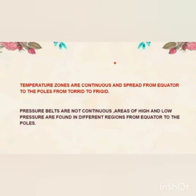Now let us remember the difference between temperature zones and pressure belts. Temperature zones are continuous, whereas pressure belts are not continuous. The temperature zones spread from the equator to the poles — that is from the torrid zone to the frigid zone. The pressure belts spread across areas of high and low pressure found in different regions from the equator to the poles.